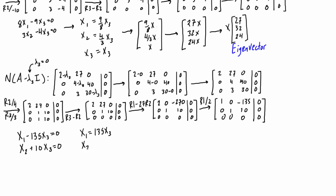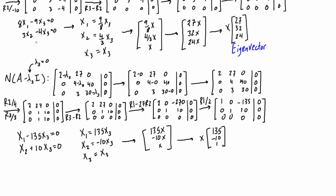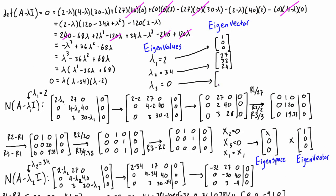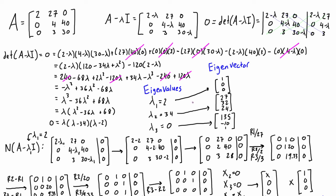And x₂ rearranged in terms of x₃ equals negative 10x₃, while x₃ is just x₃ — the independent variable. This is the solution in parametric form, which we rewrite in vector form, dropping the subscript: 135x, negative 10x, and x. Pulling out the x, we get the eigenvector [135, -10, 1], which belongs to λ₃. We can go back and add that in alongside the other eigenvectors. So we have our solution: three eigenvalues — 2, 34, and 0 — each with a corresponding eigenvector.